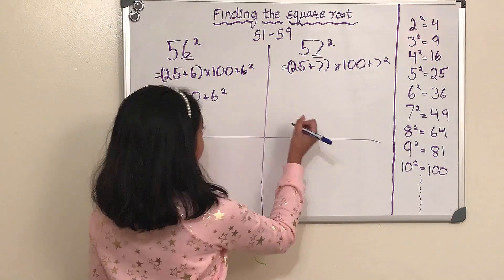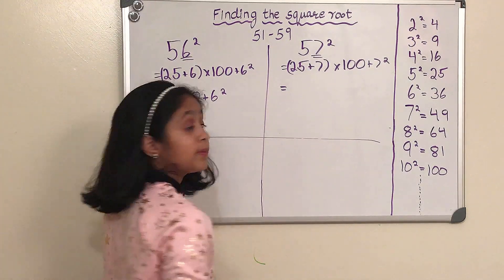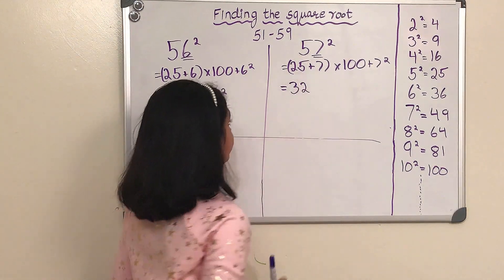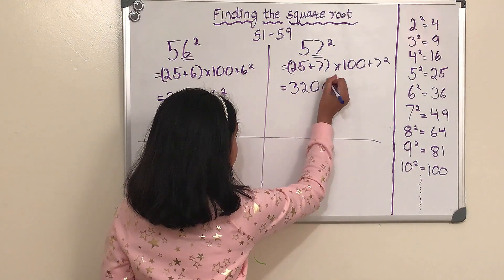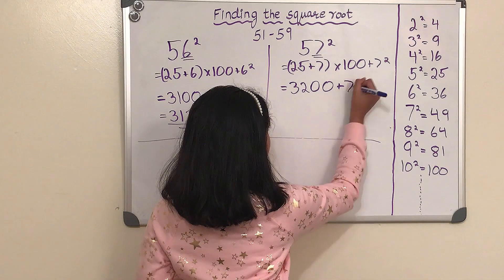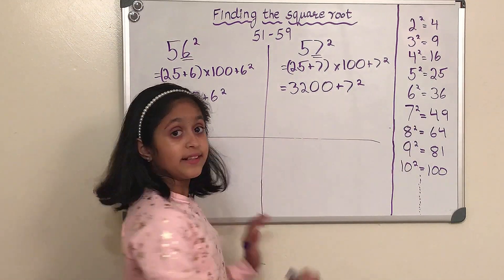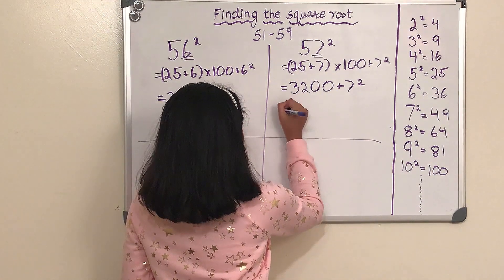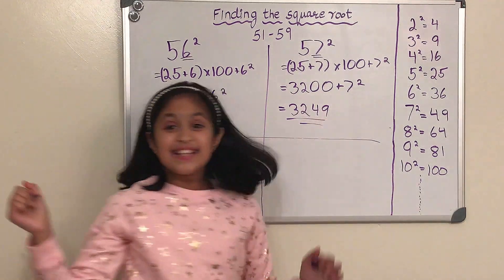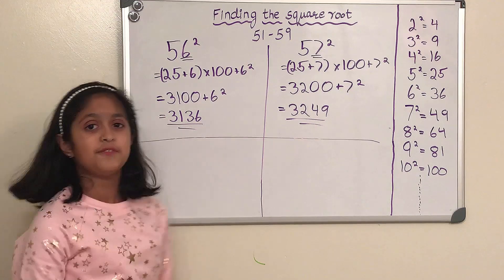Now let's get into the math. Our first step is 25 plus 7, and that equals 32. Then multiply that by 100, which is 3200. Now add 7 squared: 7 times 7 equals 49. So our answer would be 3249. And we've got the answer to our second problem, which was 57 squared.